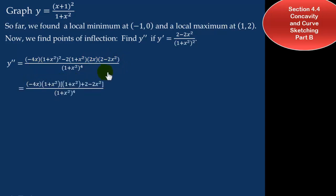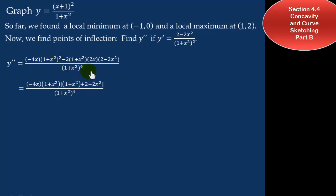When we simplify, we pull out negative 4x because there are two factors of 2, making negative 4. Then x is a common factor, so we pull out minus 4x. The quantity 1 plus x squared is also a common factor — pull that out as well. What is left is one factor of 1 plus x squared, plus — because we pulled out a negative — 2 minus 2x squared. Simplifying the numerator gives us our second derivative.